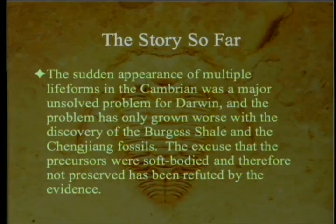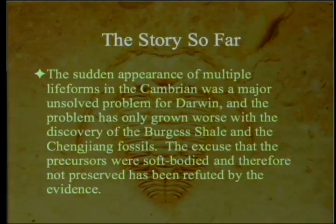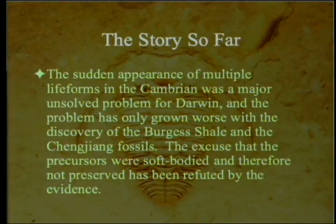The story so far: we've discussed the sudden appearance of multiple life forms in the Cambrian, which was a major unsolved problem for Darwin, and the problem has only gotten worse with time — with the discovery of the Burgess Shale and then the changing fossils in China. The excuse that the precursors were soft-bodied and therefore not preserved has been refuted by two types of evidence: we have soft-bodied creatures in the Cambrian, and we have soft-bodied creatures in the pre-Cambrian that have been preserved — just not the ones that are supposed to be there according to standard evolutionary theory.